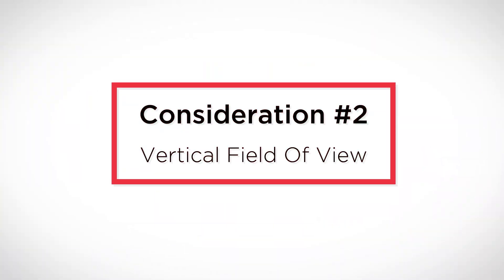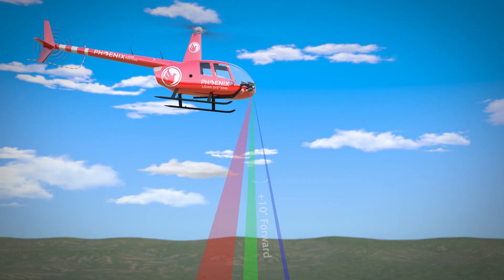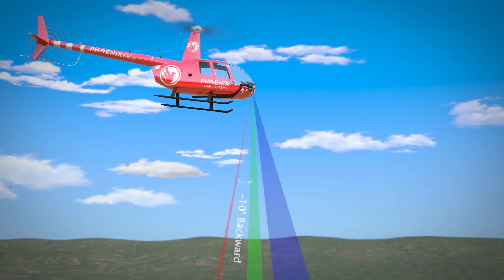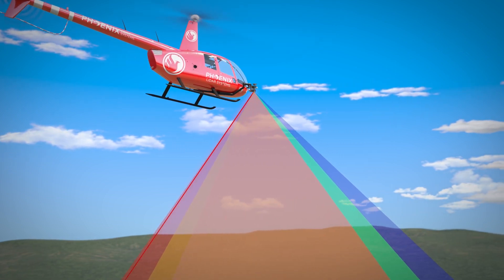Consideration number two: vertical field of view. Another way to increase the probability of LiDAR penetration through vegetation voids is to increase the variability in laser angles using forward and rear facing lasers. Scanners with a wider vertical field of view, like NFB and multi-laser scanners, offer this increased probability of penetration. An example of this is the Ranger Ultra, which has an NFB, or nadir forward-backward, scan pattern offering a 20-degree vertical field of view for enhanced vegetation penetration and mapping of vertical structure beneath the canopy.